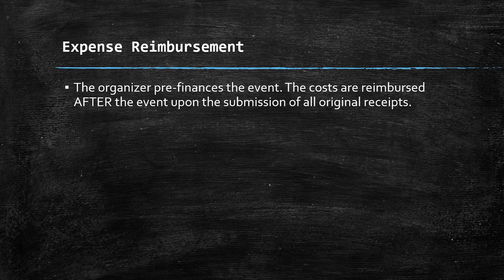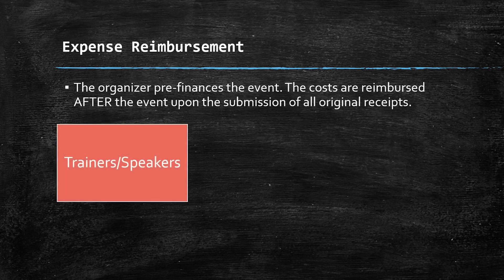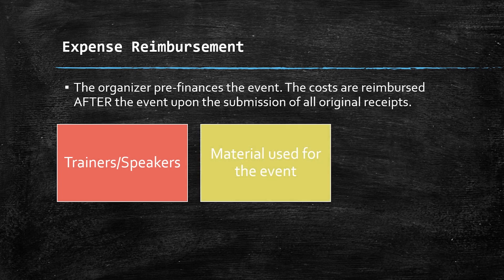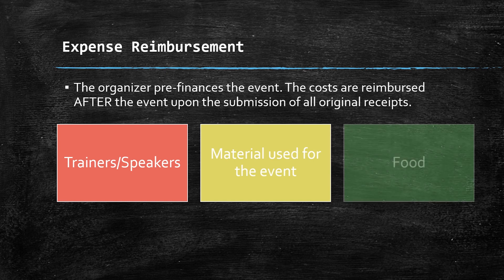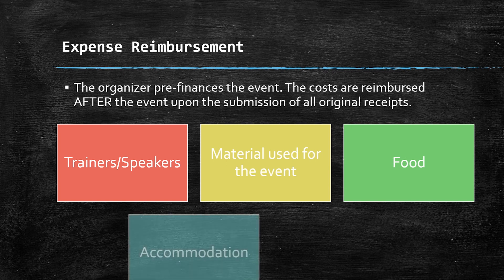So what kind of costs can be reimbursed? First are the trainers and speakers who are involved in the event. The material used for the event — that can be the printing cost, renting for projections, technical equipment, as well as the promotional material. The food and beverages included in the event can also be reimbursed.